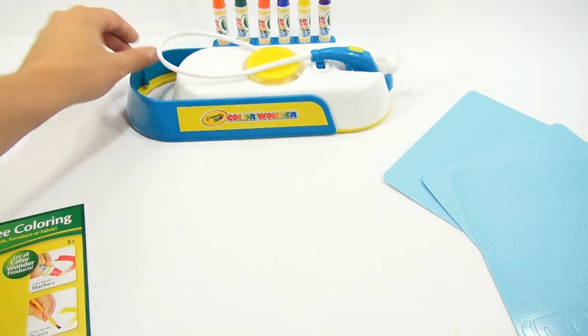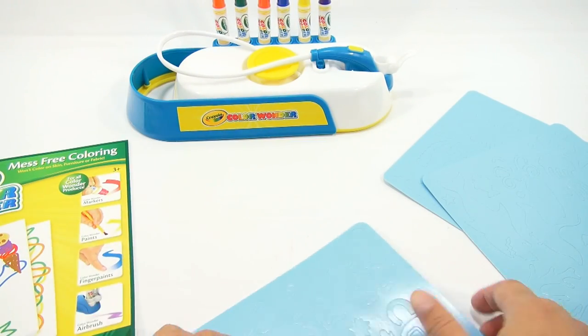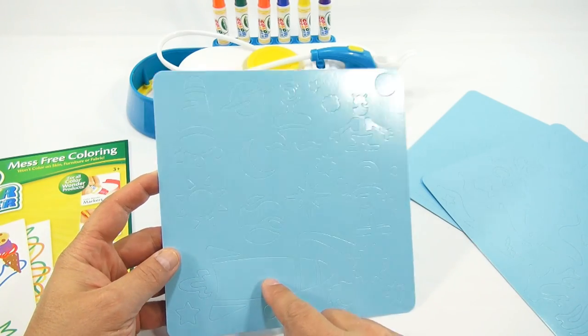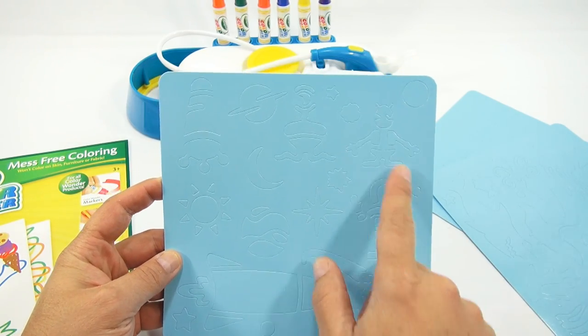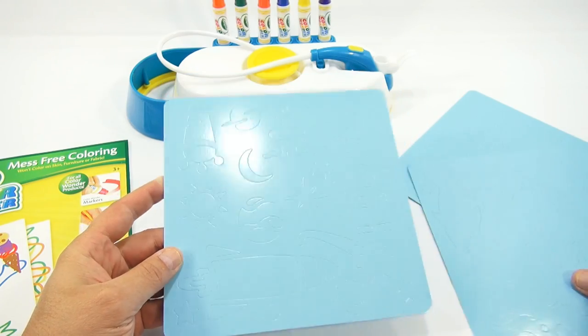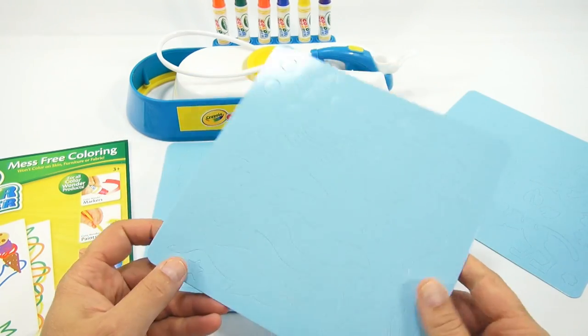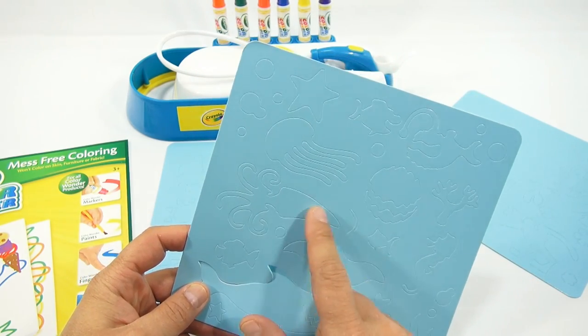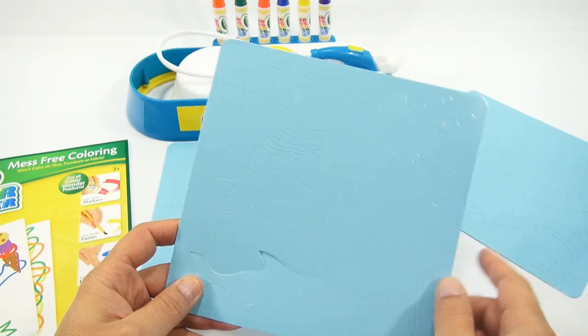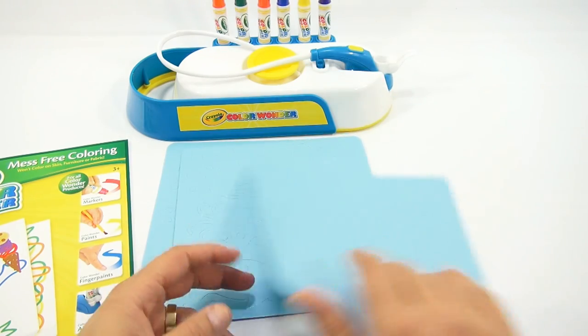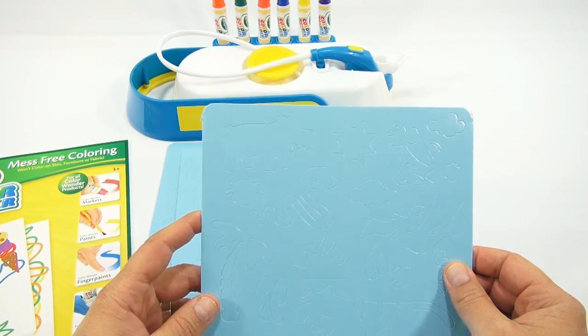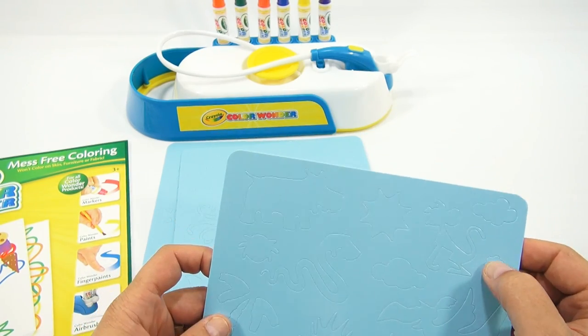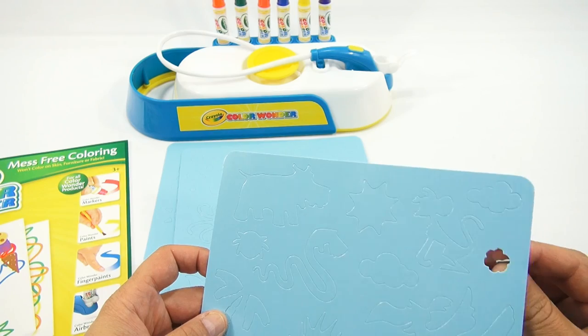So let's check out the three stencil sheets here. We have space stuff. We have a spaceship, an astronaut, stars, and creature-like things. And then we have sea life. We have a shark, a manta ray, a jellyfish, another fish, a seahorse, and then animals. And snake. Let me pop something out here. I'll pop out something simple.